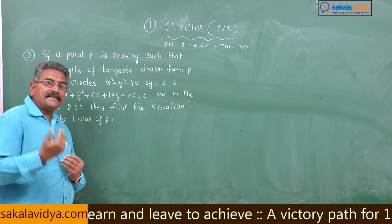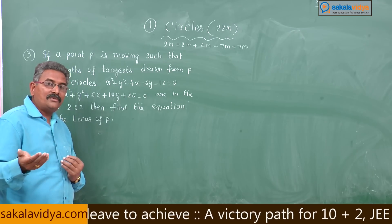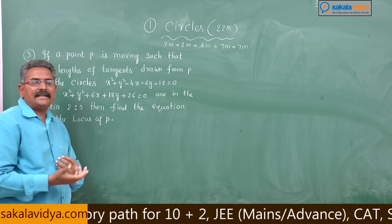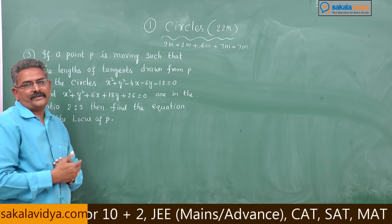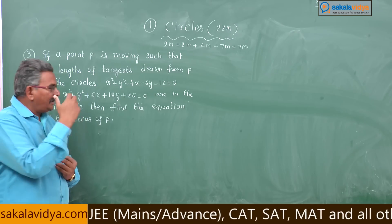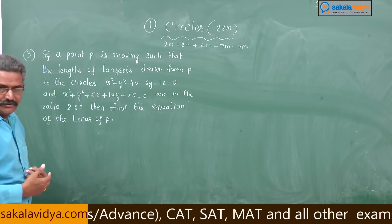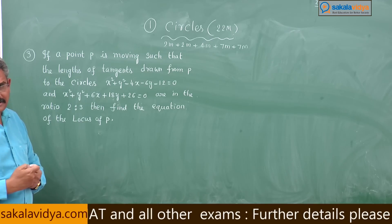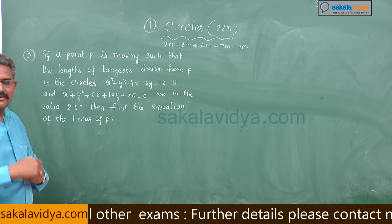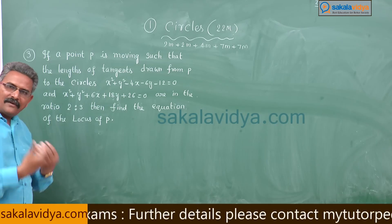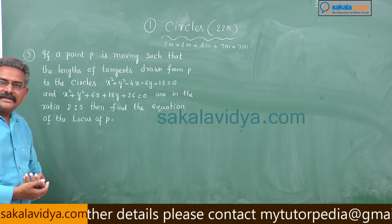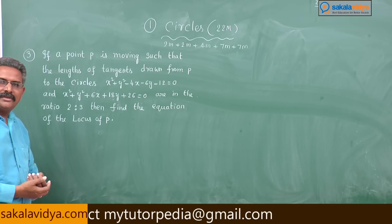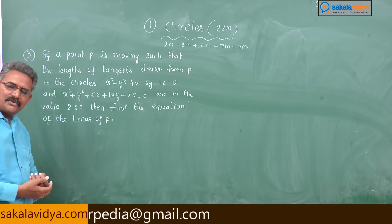For the second circle S' = 0, the length of the tangent from (x₁, y₁) to the second circle is √S'₁₁. Both are in the given ratio 2:3. That means √S₁₁ / √S'₁₁ = 2/3. Squaring both sides and by simplification we get the required equation of the locus. Shall we follow the strategy? Let us do the problem now.